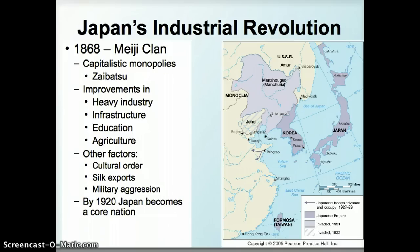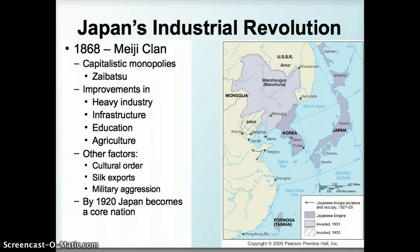A big factor that helped Japan industrialize was its exports of silk as a commodity that was desired throughout the world, so they were able to gain a lot of monetary wealth from that and use it to develop the country. This was a really successful strategy, and by 1920 Japan became a core nation of the world. If you remember back to our core and periphery model, Japan remains one of the core points for East Asia.